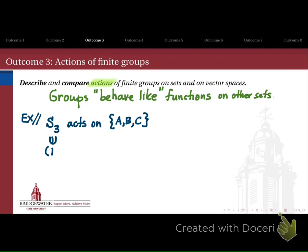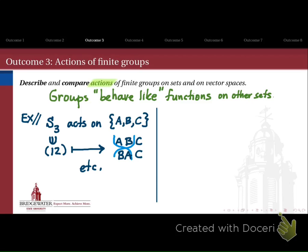A group action looks like a correspondence by which we associate to an element of S3 some permutation or function from the set {A, B, C} to itself. So we might associate to the transposition of 1 and 2 in the group S3 the transposition that takes A and B and just trades them with one another. That's just one example — we can define this in many different ways.